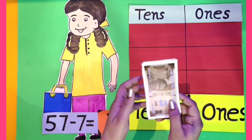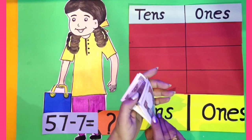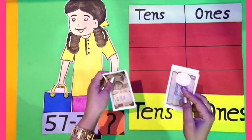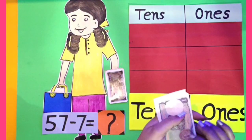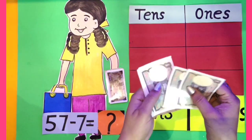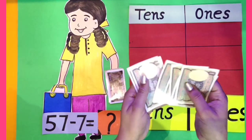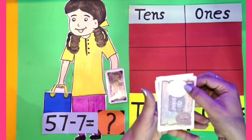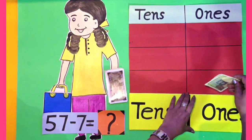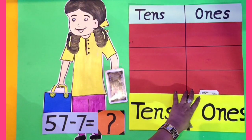Dear kids, let's separate 1 rupee notes from this. Now let's count 1, 2, 3, 4, 5, 6, 7. There are 7 one rupee notes. That means 5 tens and 7 ones.